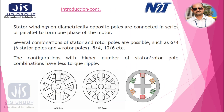The stator windings on diametrically opposite poles are connected in series or in parallel to form one phase of the motor. There are several pole combinations, such as 6 by 4 (meaning 6 stator poles and 4 rotor poles), 8 by 4, 10 by 6, and so on. The figures shown here demonstrate the 6 by 4 and 8 by 6 pole configurations.